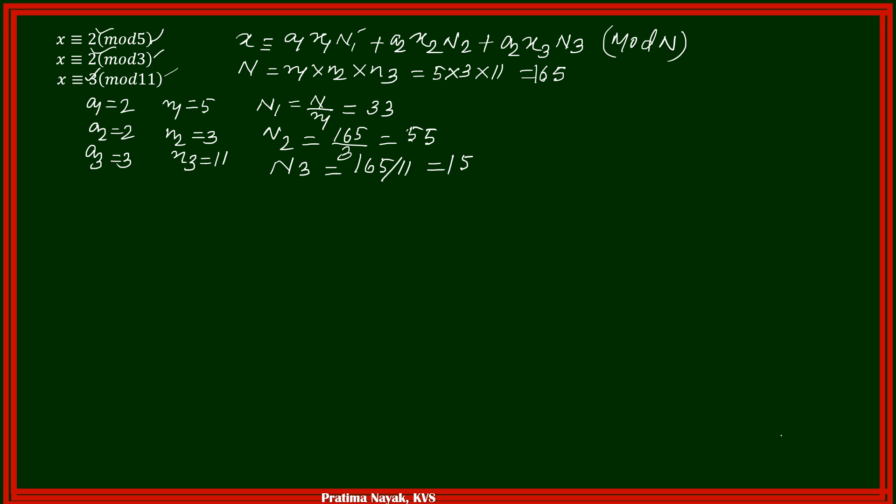Now coming to x1, x2, x3, how it is found out? It is found out in this way. So N1 x1 is congruent to 1, modulo small n1. So N2 x2 is congruent to 1, modulo n2. And N3 x3 is congruent to 1, modulo n3. From this, we will get your x1, x2, x3.